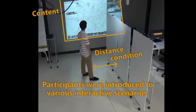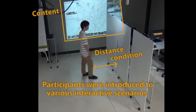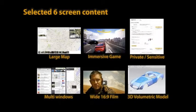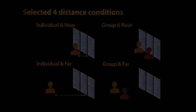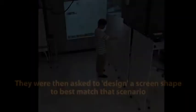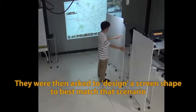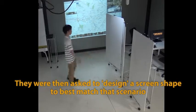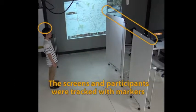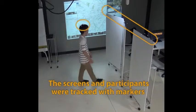Participants were introduced to various interactive scenarios, presented by different content and distance conditions. We used six different content types typically shown on large displays, and four distances of individuals and pairs standing in front of the display. Participants were then asked to design display shapes to best match the interactive scenario. We optically tracked the participants and their display shape designs.